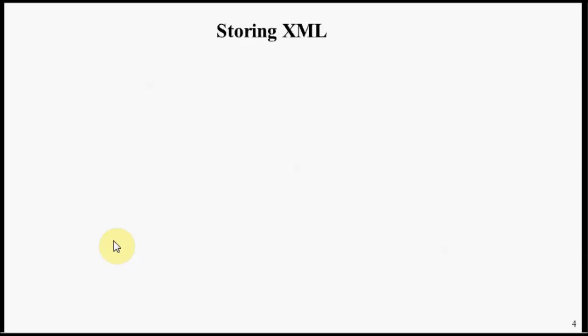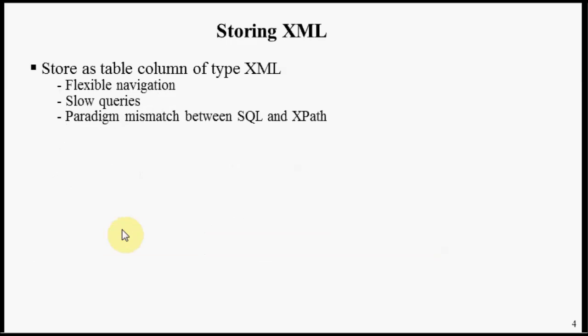Let's look at different ways of storing XML in a relational database system. The first approach is to store XML as table columns of type XML. The advantage is that navigation is very flexible using XPath. Unfortunately, the queries are kind of slow, and you end up with a paradigm mismatch between SQL and XPath — some columns use standard SQL while XML-type columns use XPath queries.